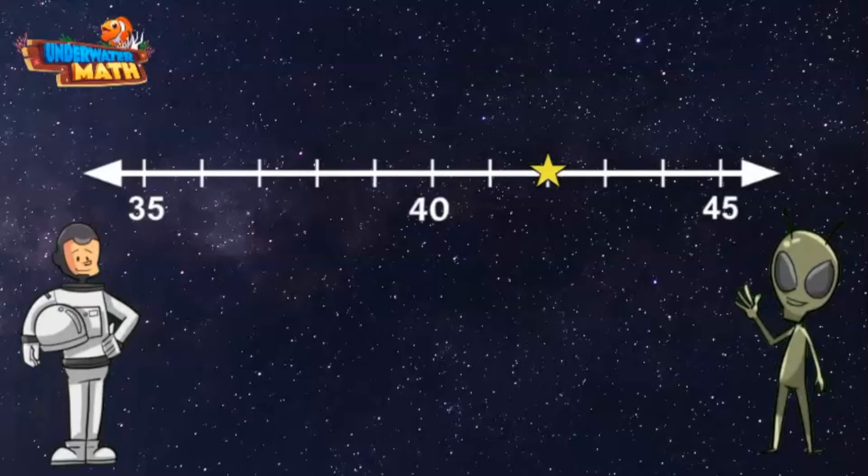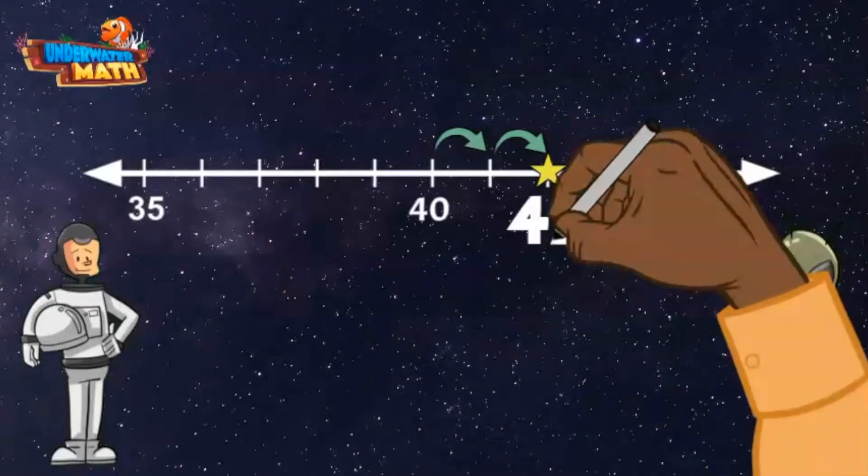Let's start at 40 and count until we reach the star: 40, 41, 42. The star represents the number 42.